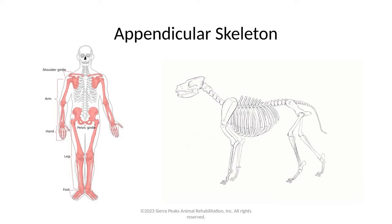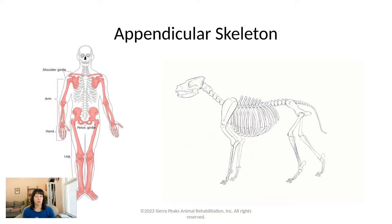Next, we're going to talk about the appendicular skeleton. Skeletally, it's pretty similar. The big difference is dogs do not have collarbones or clavicles. In the shoulder joint, they are weight-bearing on their shoulders where we generally are not. Dogs do have an anconeal process, which is an extension off of the front side of their olecranon that actually fits into the olecranon fossa. This extra bony structure gives them stability in the elbow joint to hold their body weight in an upright position.